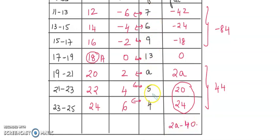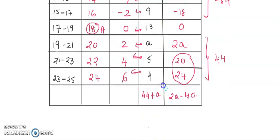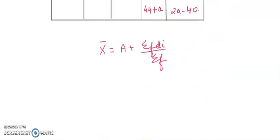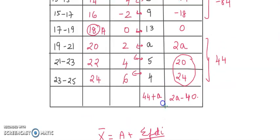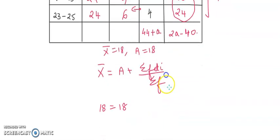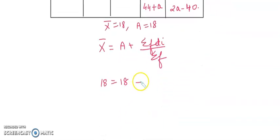Adding the frequencies, you will get 44 plus a. Now the mean formula is: x-bar equals A plus sigma f*d_i divided by sigma f. Our mean is 18, so 18 equals 25... the assumed mean is also 18. Plus 2a minus 40 divided by a plus 44.